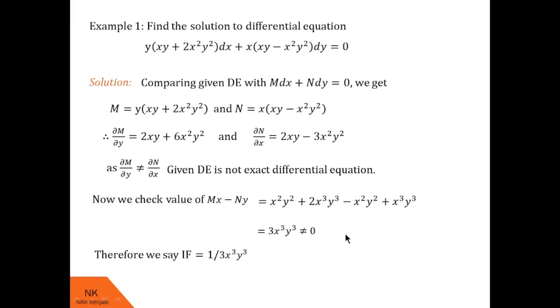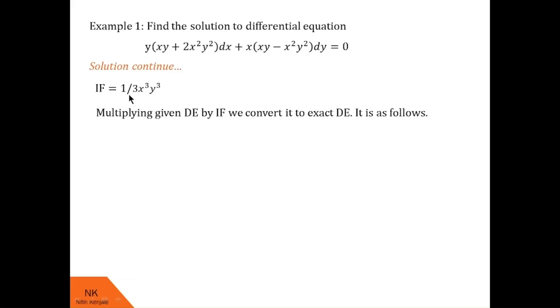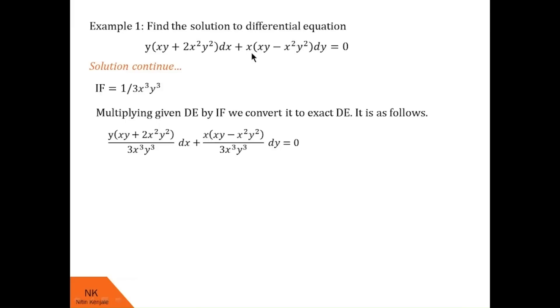Now we multiply the given differential equation by this integrating factor. On multiplying, we get a new differential equation: [y(xy + 2x²y²)/(3x³y³)] dx + [x(xy − x²y²)/(3x³y³)] dy = 0.